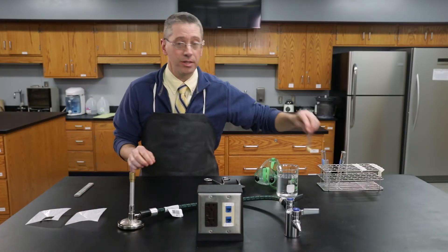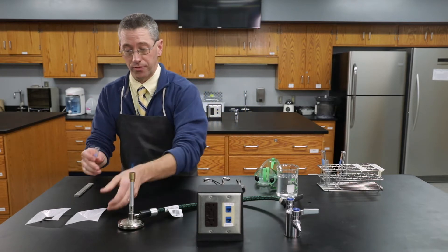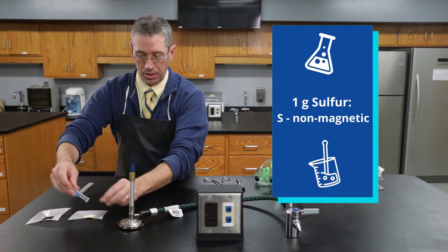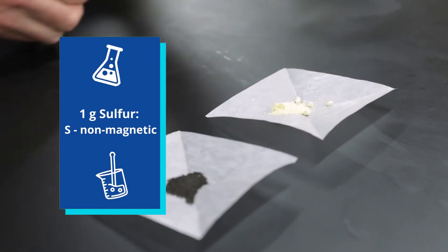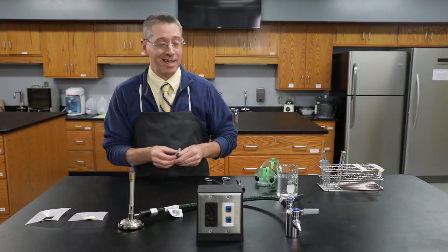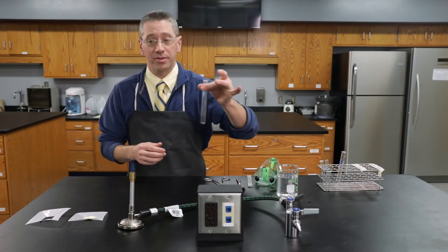Our second element is going to be 1 gram of sulfur which is a yellow non-metal that is not magnetic. We're going to react these two together to make iron sulfide inside of this test tube.